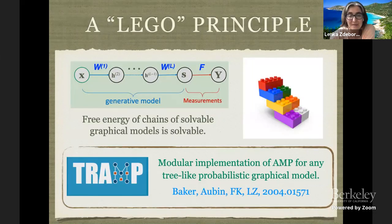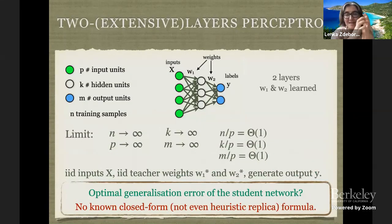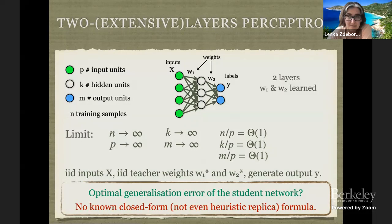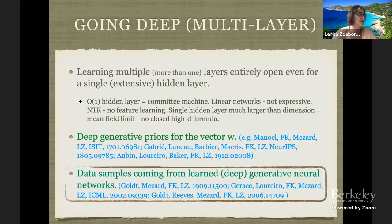This brings me back to the open problem: I need the module to be solvable. If I could solve this single hidden layer module, the Lego principle makes me confident I could solve any number of layers. Not being able to write a proper replica formula for this model is really blocking us on the way of trying to say something relevant about deep learning in deep networks.